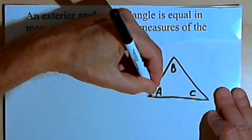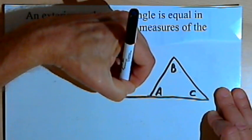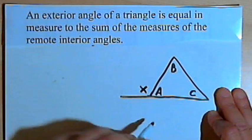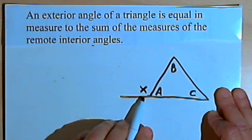And then I'm going to extend one of the sides. I'll extend the base so that I form an exterior angle adjacent to angle a. I'm going to call that angle x so that we can remember that it's exterior.